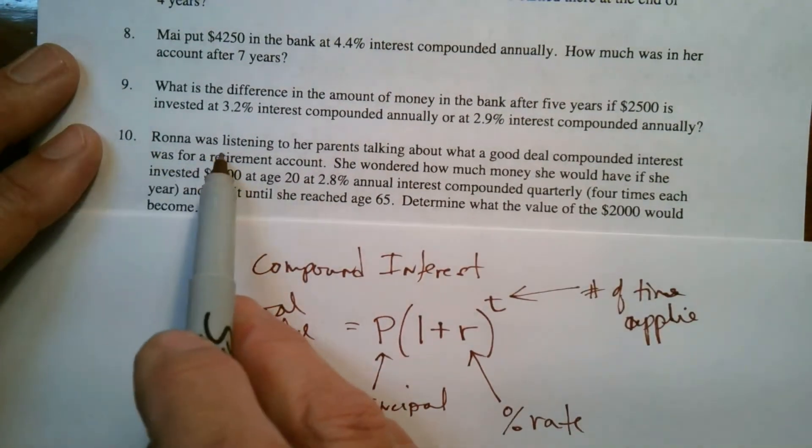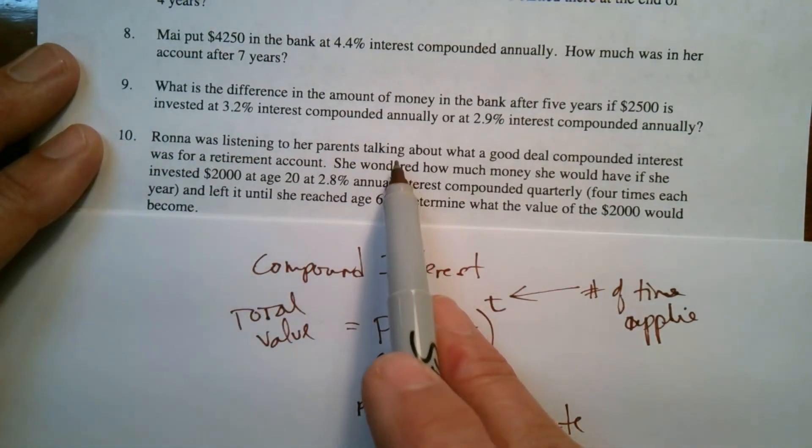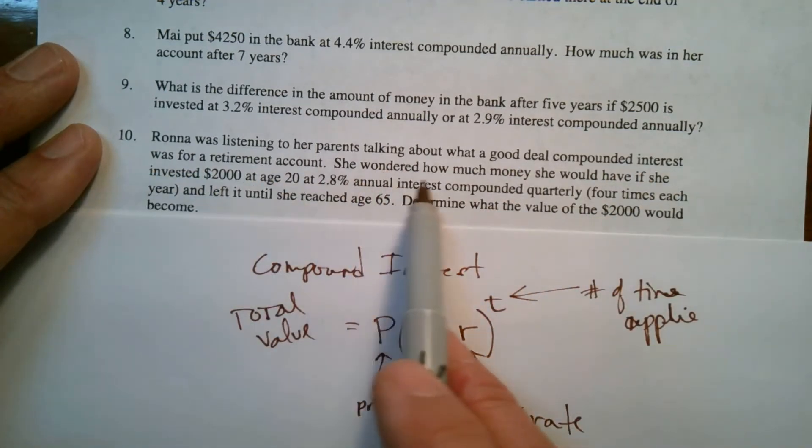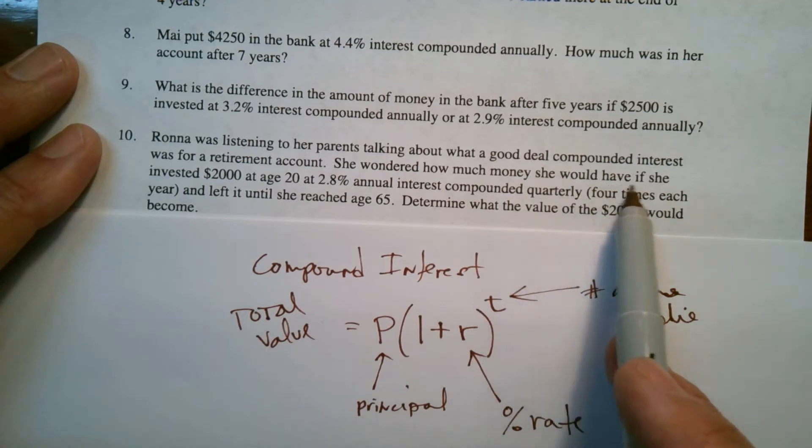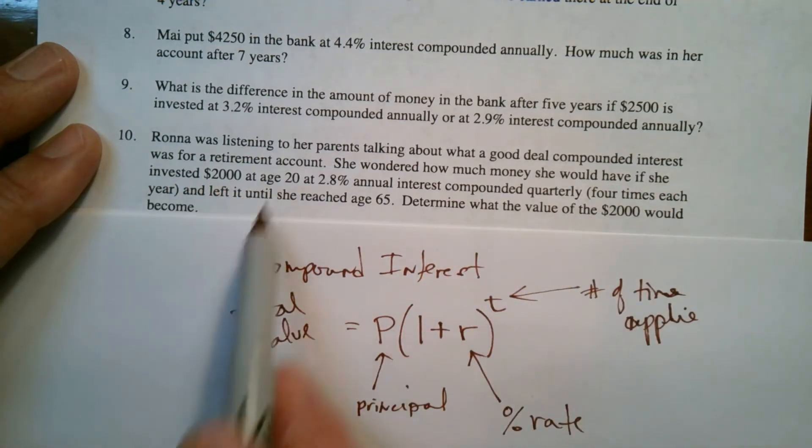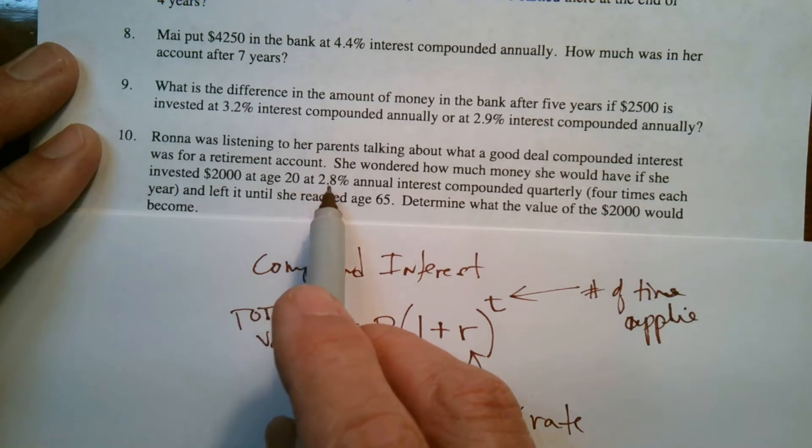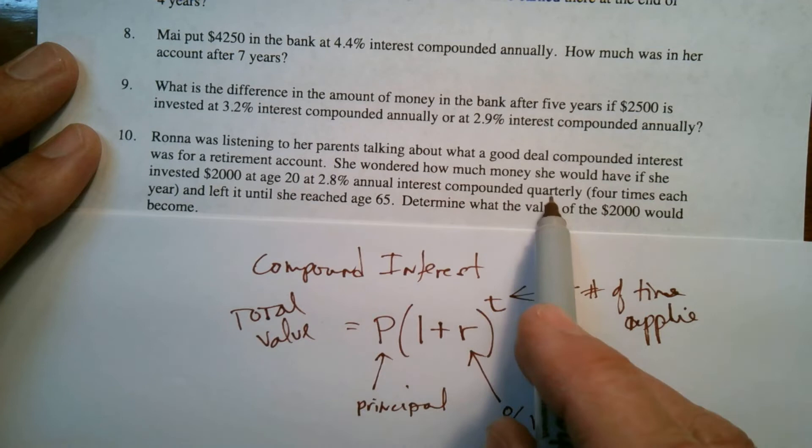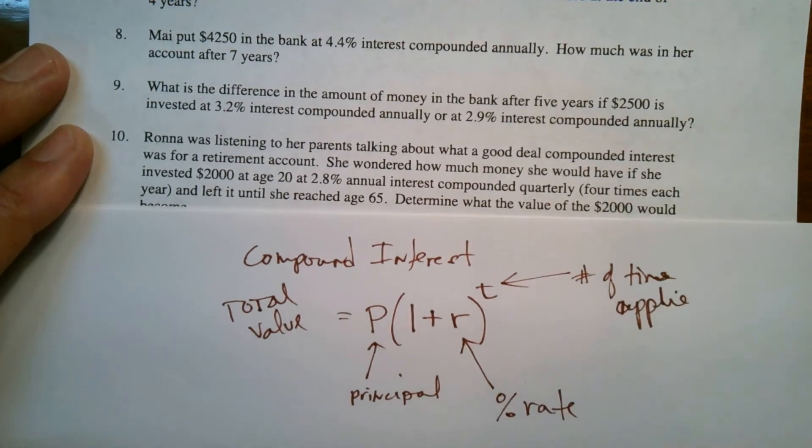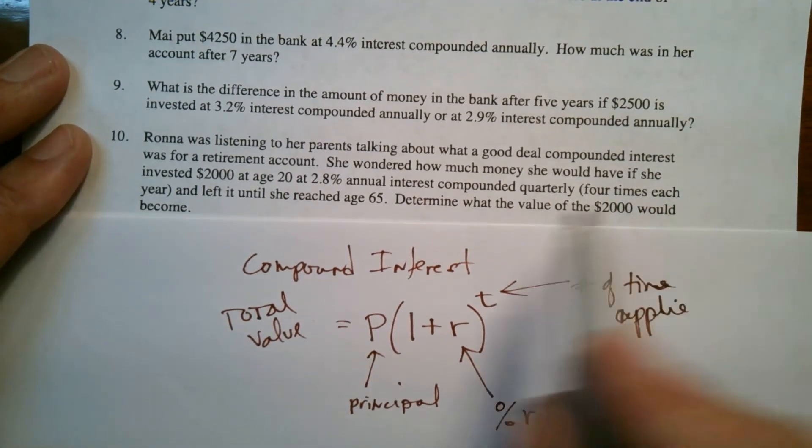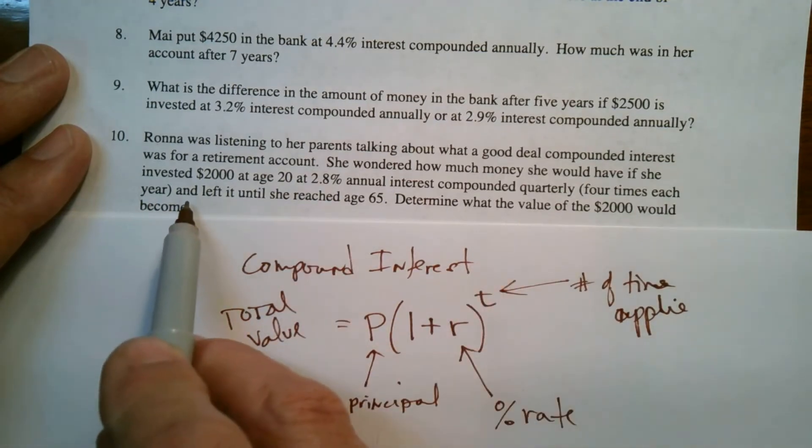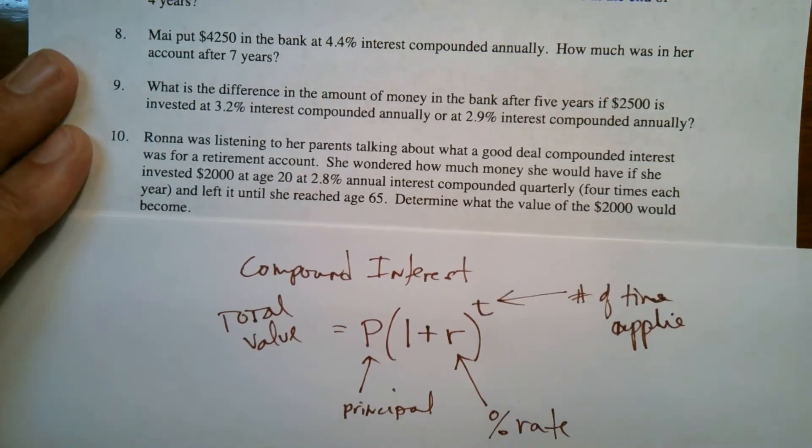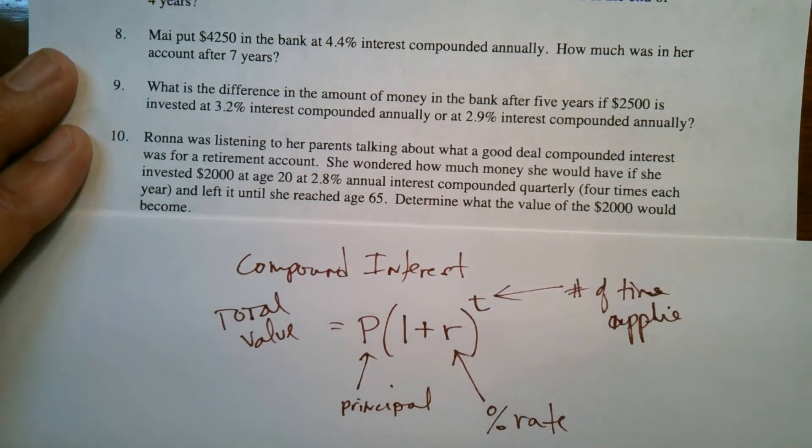So let's read this question. Rona was listening to her parents talking about what a good deal compound interest was for a retirement account. She wondered how much money she would have if she invested $2,000 at age 20 at a 2.8% annual interest compounded quarterly. So that's a little different, not compounded annually, compounded quarterly, which means four times each year. Annually would be once a year and left it in until she reached age 65. So determine what value the $2,000 would become.